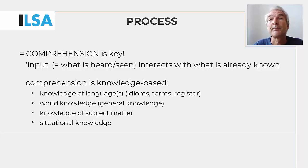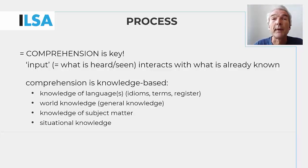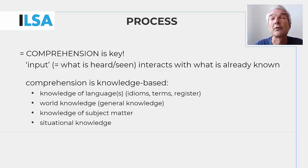In the comprehension process, the input interacts with what is already known. The knowledge required is first and foremost linguistic, as we cannot understand a message in a language we do not know. This includes idiomatic phrases, but also more technical expressions and specific usage or registers of speech. But the role of knowledge goes much further, and also includes relevant general knowledge or world knowledge, knowledge of the specific subject matter, as well as situational knowledge — that is, knowledge about the speaker and the audience, and about the purpose of communication in a given setting.